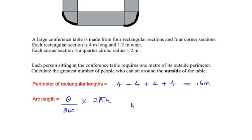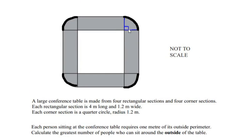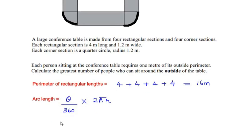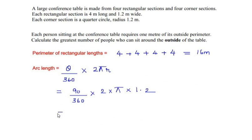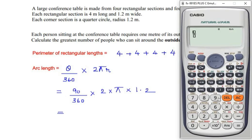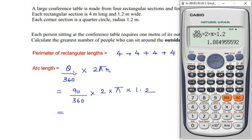The formula for arc length is: arc length = (θ / 360) × 2πr, where θ is the central angle. Substituting θ = 90 degrees and radius r = 1.2 meters: (90 / 360) × 2 × π × 1.2, which gives 1.8849 meters for one corner.